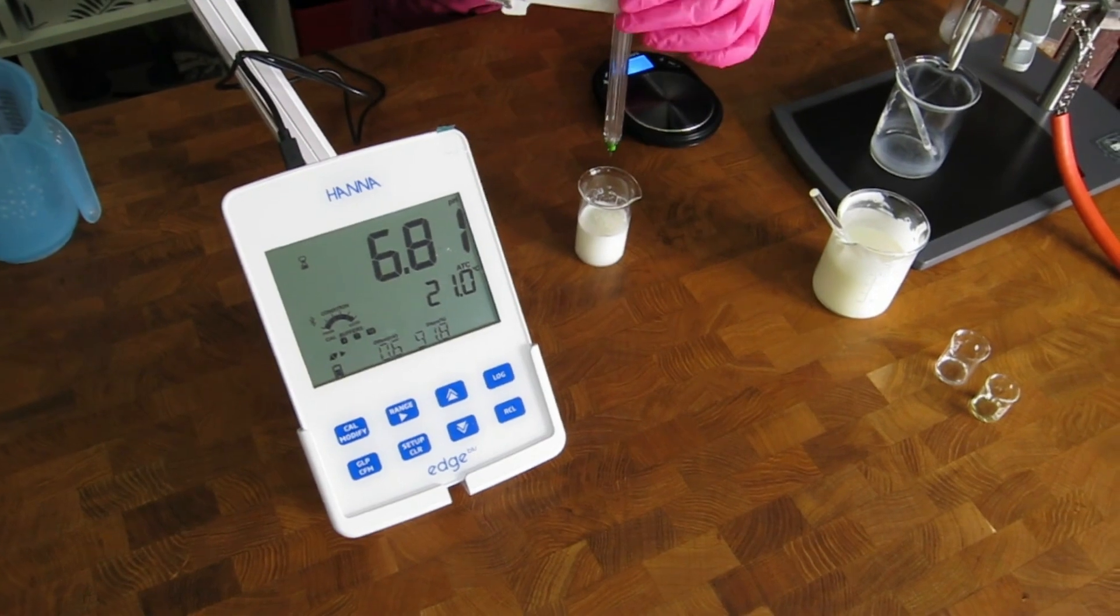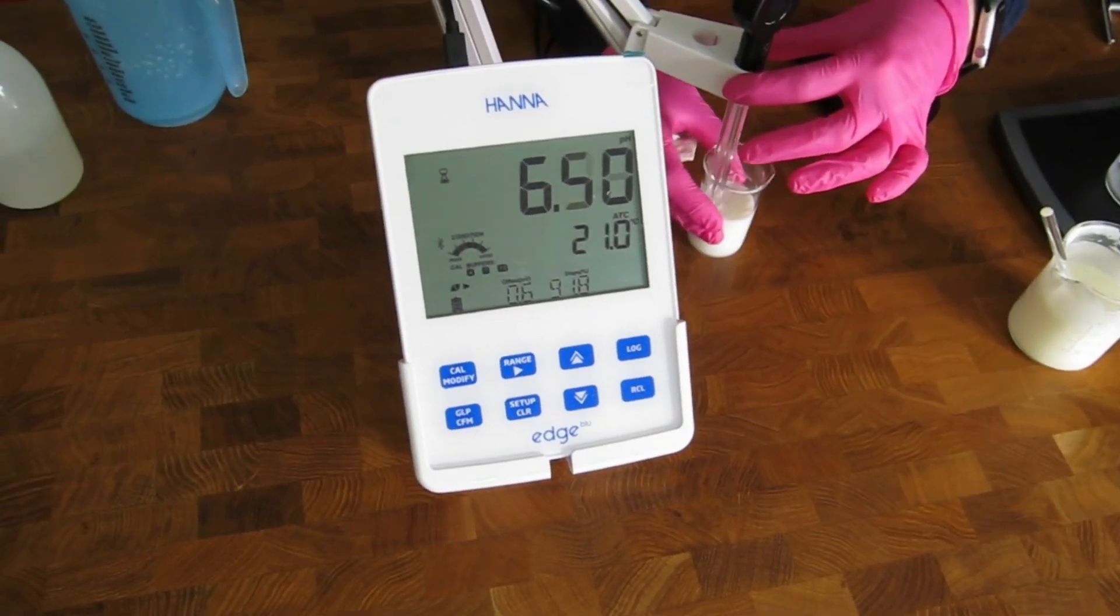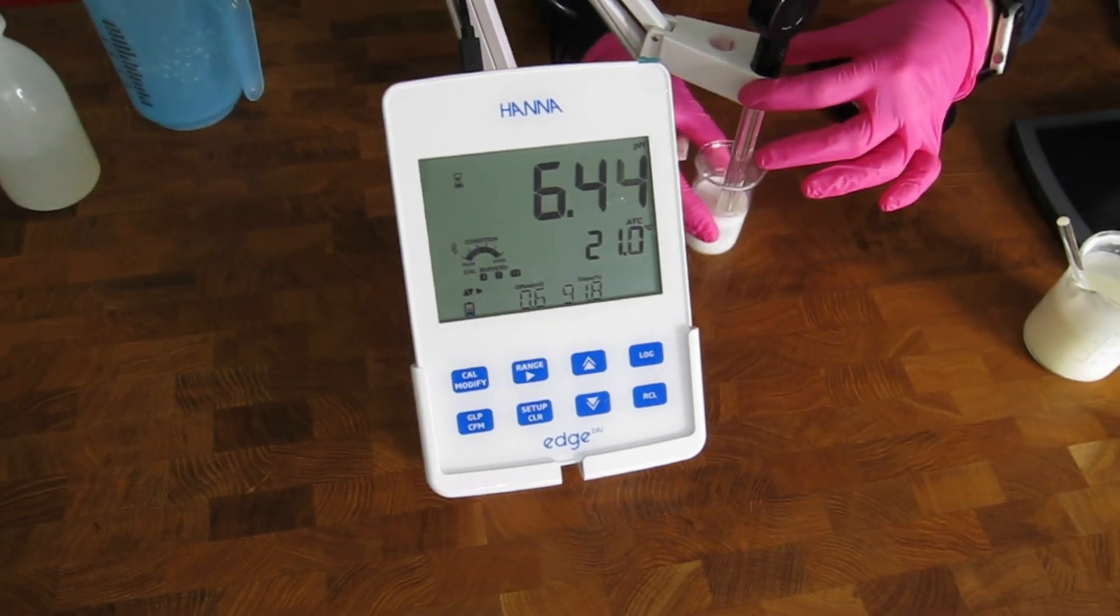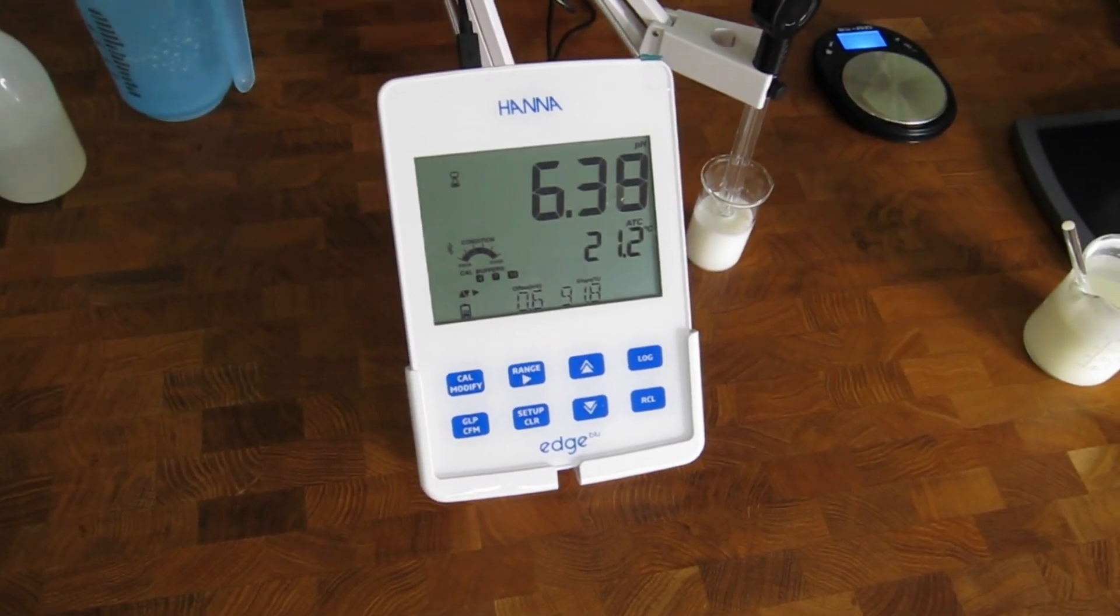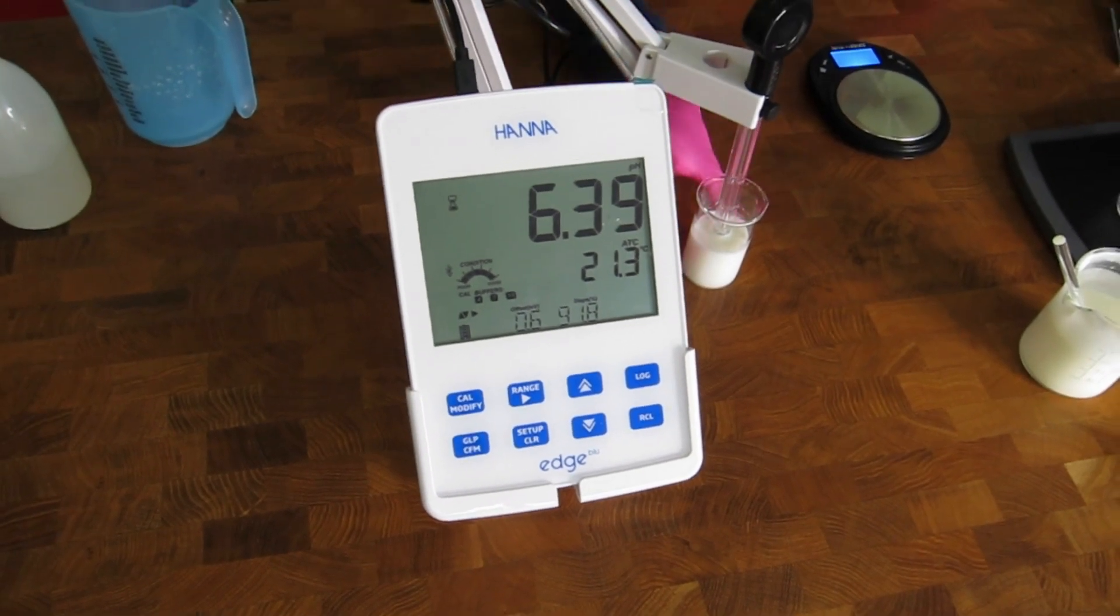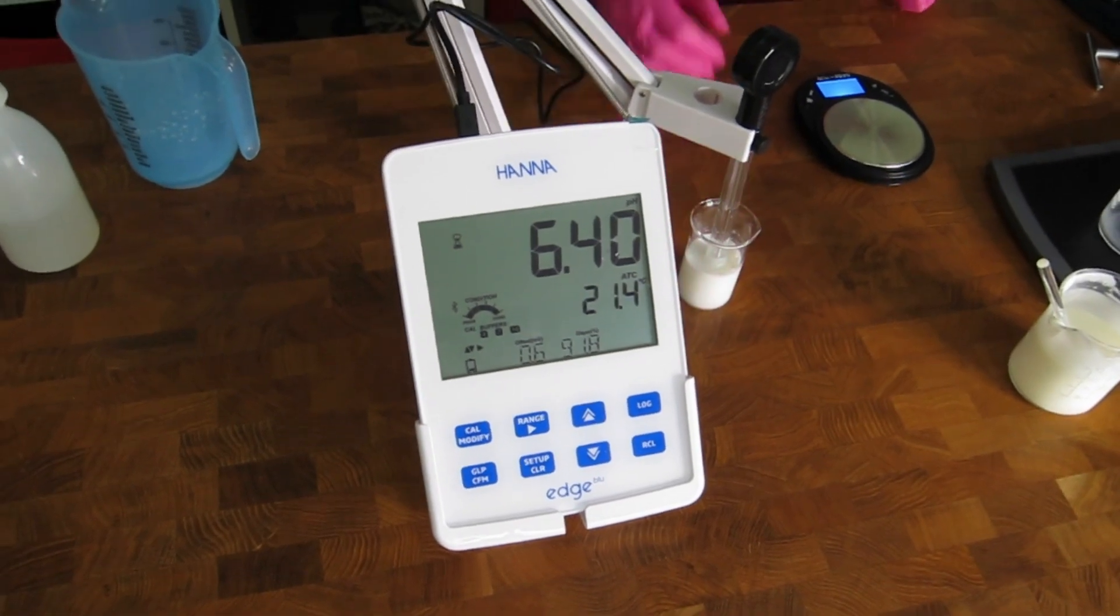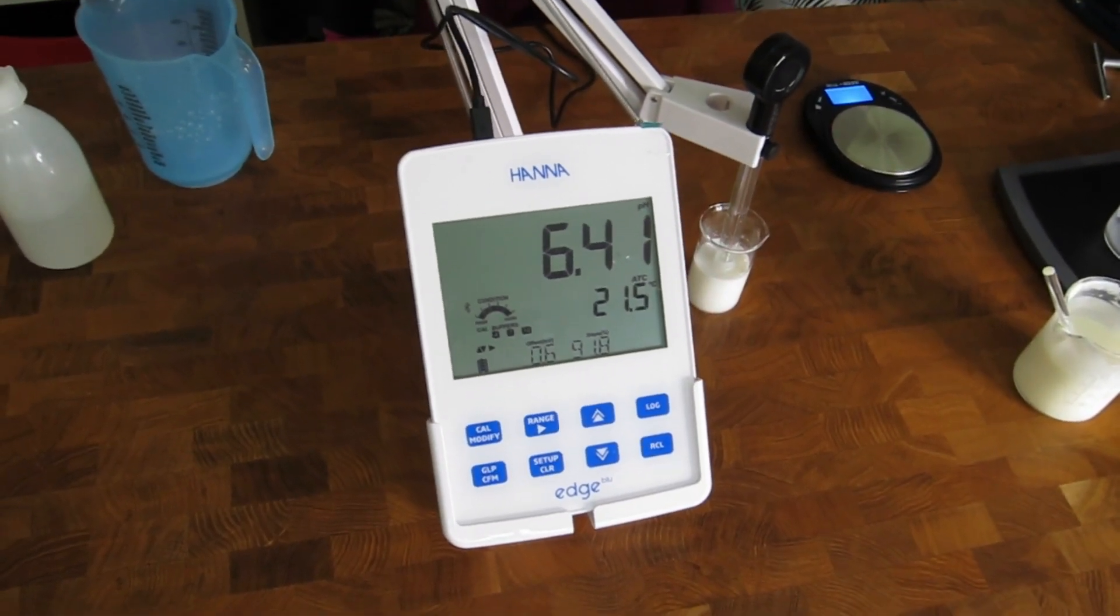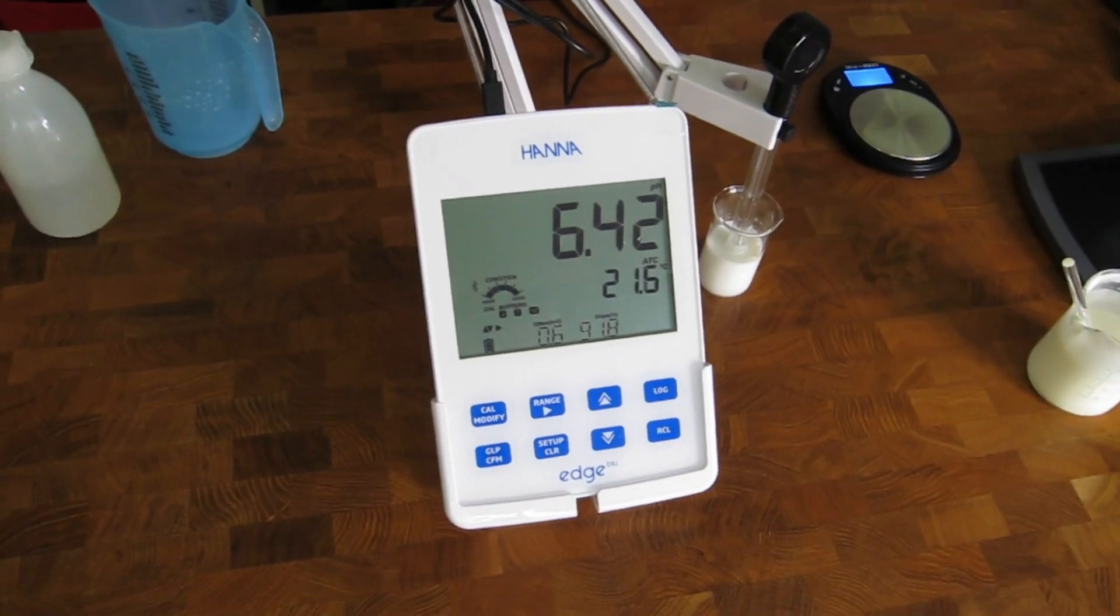Our pH meter is calibrated so the pH is 6.39, which is slightly higher than our range. We will add the preservative, the essential oil, and then we will reduce the pH by adding lactic acid.